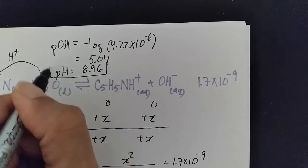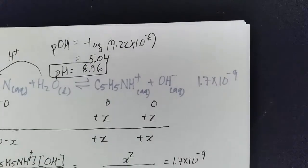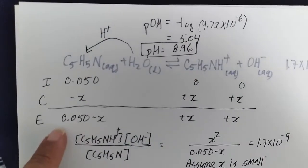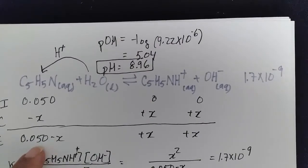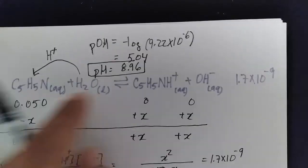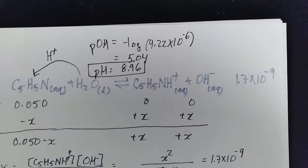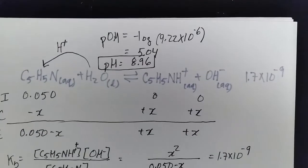So above 7, this is a basic solution, and pyridine is a weak base. This bottle of pyridine at a concentration of 0.050 molar will have a pH of 8.96 and a pOH of 5.04.